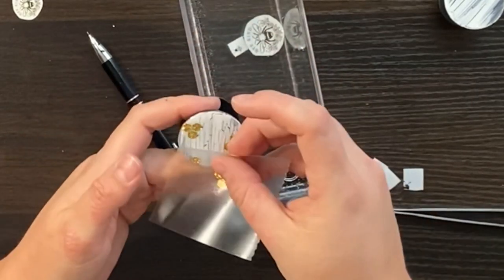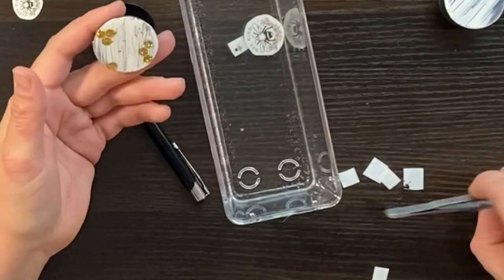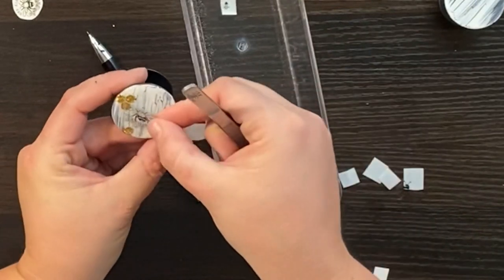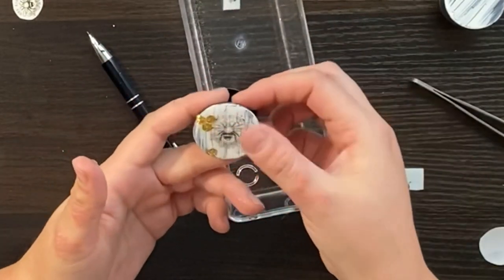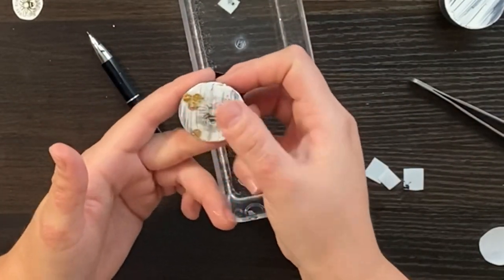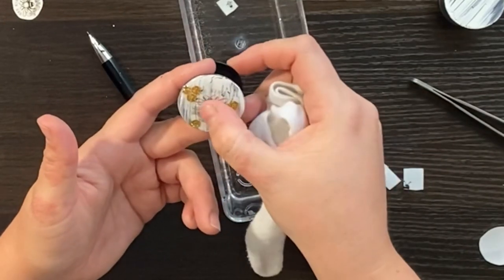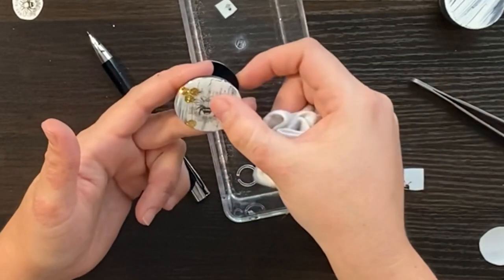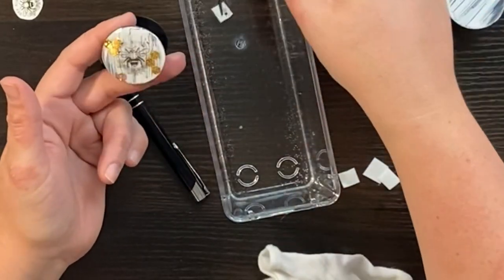I'm only going to add a couple to my pop socket. I don't want it too overcrowded. So I am just adding a few and then I will add my main decal and then add a few bees around the edges.